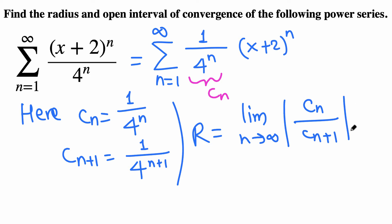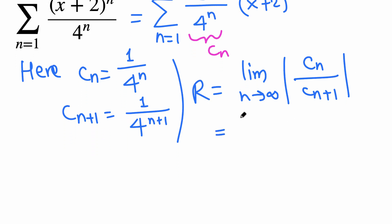This is limit as n goes to infinity of cn, which is 1 over 4^n on the top, divided by 1 over 4^(n+1). Dividing means we multiply by the reciprocal.